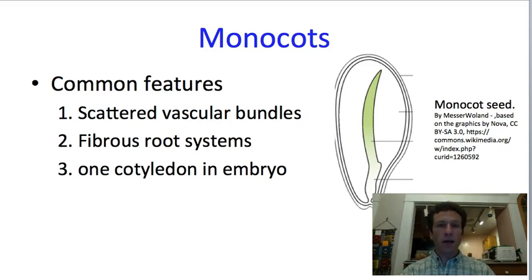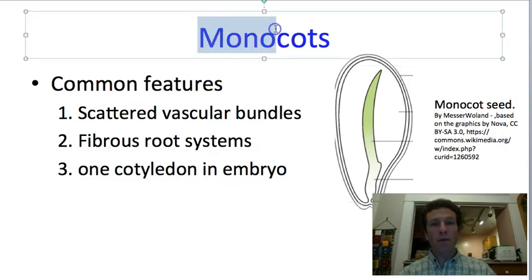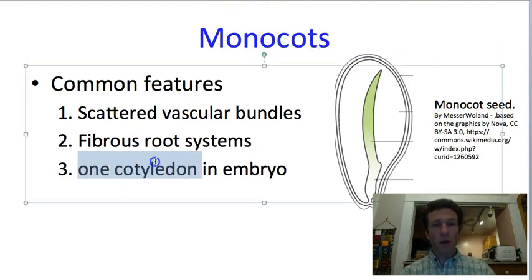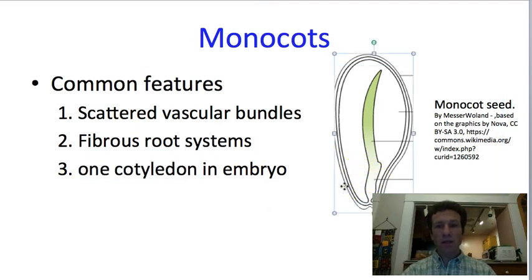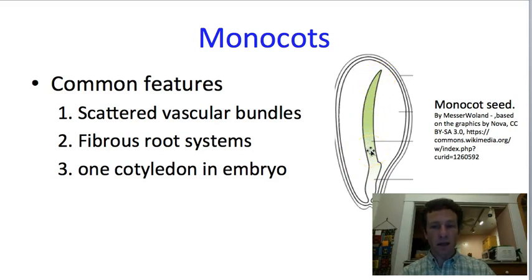Another feature of the monocots is the one that gives them their name: they have one cotyledon as an embryo when still in the seed. The prefix mono means one, and cot is short for cotyledon, so monocot literally means one cotyledon. In the diagram, you can see the double integument, some endosperm shown in white, and then the embryo itself. The embryonic leaf — the cotyledon — is up here, and you can see there is one of them. In a dicot there would be two.